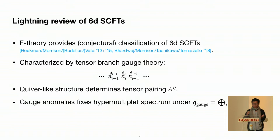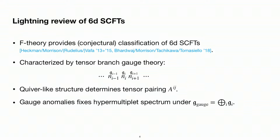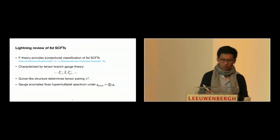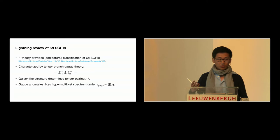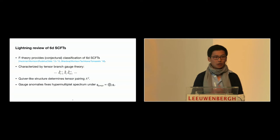Even though F-theory has been instrumental in our understanding of 6D SCFTs, I will not talk much about the geometric construction of these theories. Instead, what will be relevant is that these SCFTs have a tensor branch — a deformation that breaks the conformal symmetry. The tensor branch gauge theory has a quiver-like structure with certain gauge factors associated with tensor multiplets, and this structure encodes information about the pairing between tensors related to the geometric realization in F-theory.